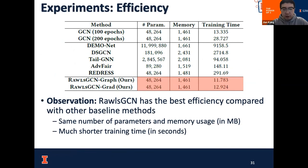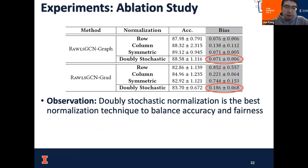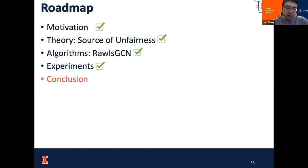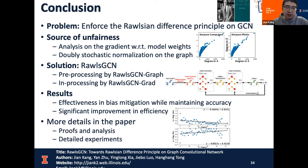In terms of efficiency, the Rawls GCN family has the same memory cost as GCN and a much shorter training time compared with all baseline methods. From the ablation study, our choice of doubly stochastic normalization is the best choice to balance accuracy and fairness. In conclusion, to mitigate degree-related unfairness, we study how to enforce the Rawlsian Difference Principle on GCN, analyze the source of unfairness through gradient analysis, which naturally leads to doubly stochastic normalization. We propose a preprocessing method Rawls GCN Graph and in-processing method Rawls GCN Train, demonstrating effectiveness and efficiency over all baselines.